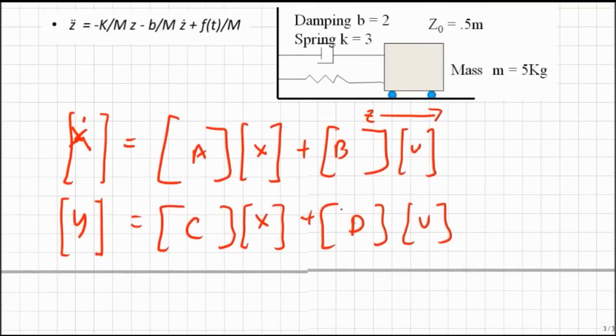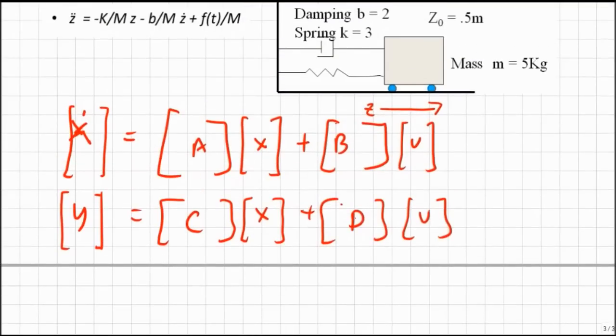So the first thing we need to pick, what are our states, right? Well, how many states do we need? We have two energy storage devices. We have a mass, which will store energy, and we have a spring, which will store energy. So we need two states, or we could look at it in our differential equation, we see we have two derivatives, or if we're going to go solve for Z, we're going to have to integrate twice. So all those lead us to believe that we have two states.